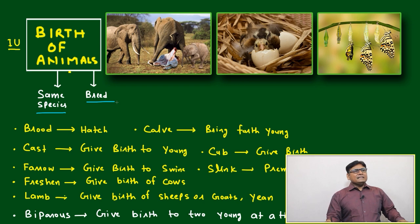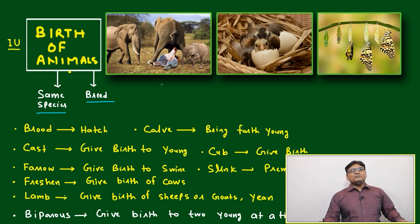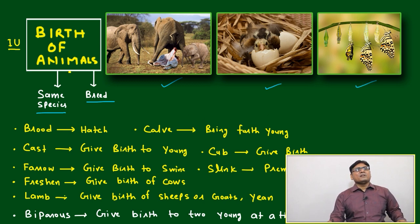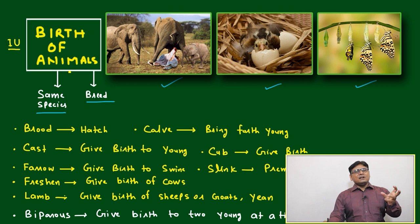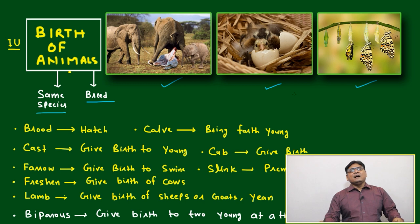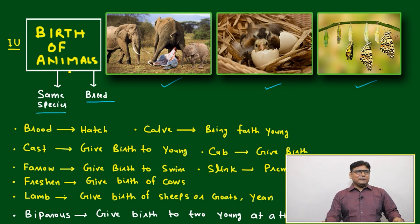Here we can see pictorially the different ways animals come into this world. One is the mammal's way, like an elephant. Another is coming from an egg, or hatched way. Another is coming from a cocoon, like a butterfly.